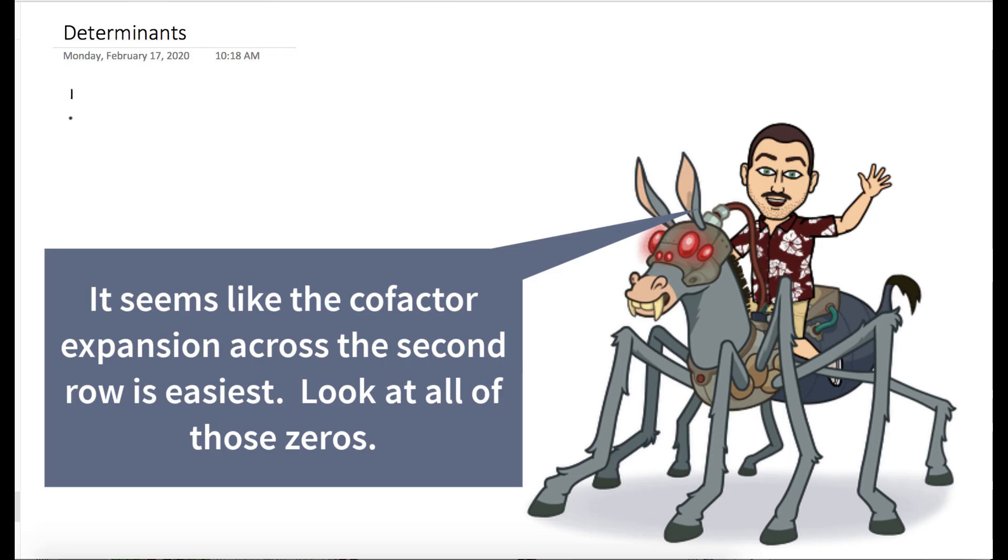We can start by writing down the matrix, and what we want to do is figure out which row or column has the most zeros in it, and we'll use that as our row for the cofactor expansion.